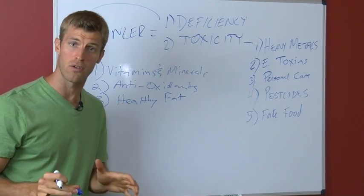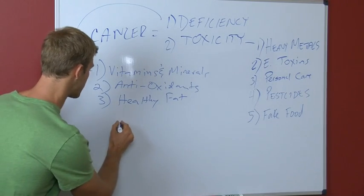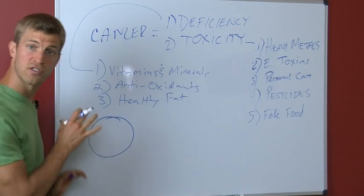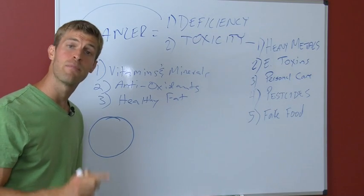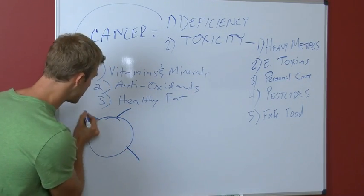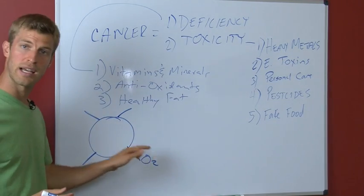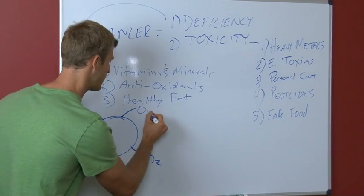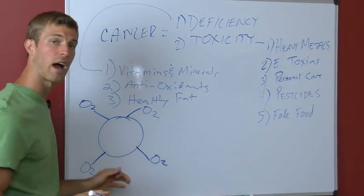Let me show you on a cellular level what happens with a cancer cell and how a cell becomes cancerous. Right here we have your cell. Your body is made up of over seventy-five trillion cells. Every cell you have in your body has four oxygen receptor sites. Your body should actually bring in oxygen. We see that here. All four areas, four oxygen receptor sites. All your cells run off oxygen.